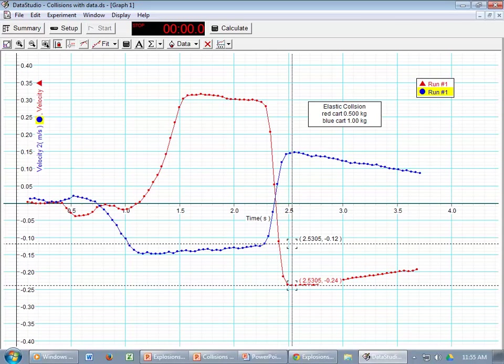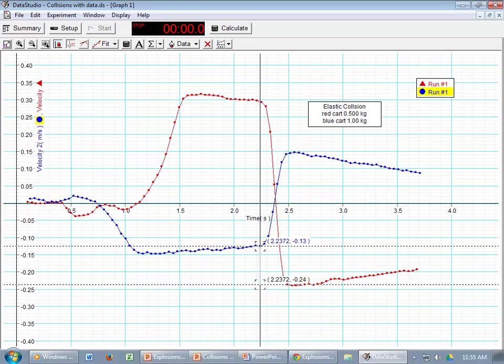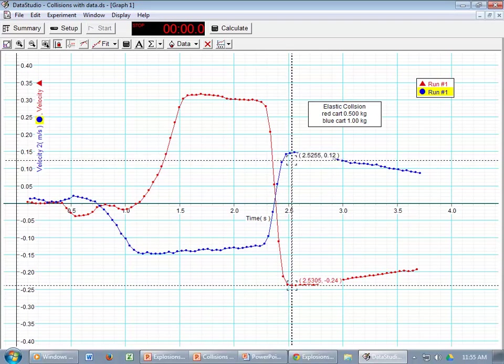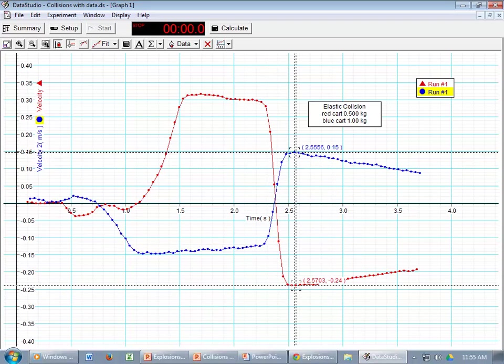Click on the blue thing up here, and you can drag this one around. There is the initial velocity of the blue cart, about negative 0.13. There is the final velocity of the blue cart, about positive 0.15. Notice, don't use these numbers. Those are the times. You've got to use the ones out in front.